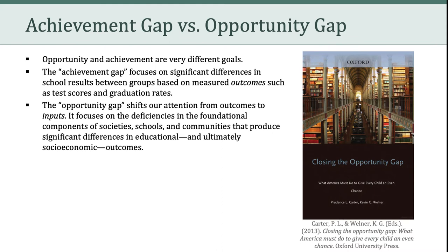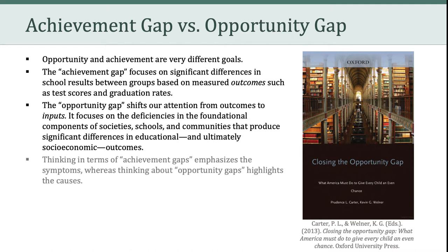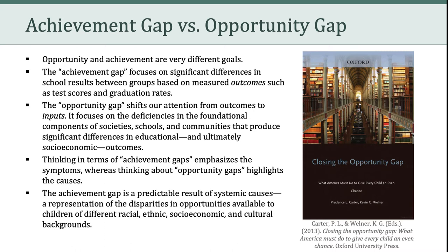In contrast, the opportunity gap shifts our attention from outcomes to inputs. It's not about what comes out of the education system, but what goes into it. The opportunity gap focuses on the deficiencies in the foundational components of societies, schools, and communities that produce significant differences in educational and ultimately socioeconomic outcomes. A convenient way to think about it: achievement gaps emphasize the symptoms, whereas opportunity gaps highlight the causes of those symptoms. The achievement gap is a predictable result of systemic causes — a representation of disparities in opportunities available to children of different racial, ethnic, socioeconomic, and cultural backgrounds.